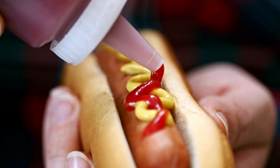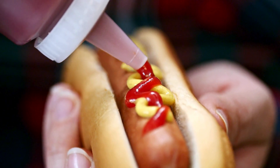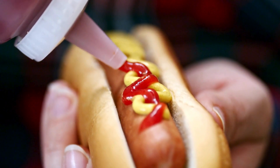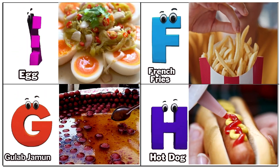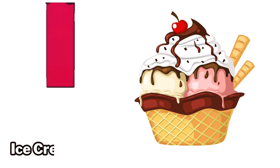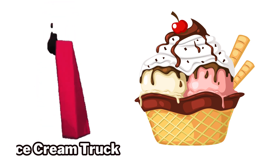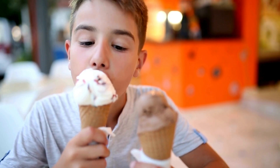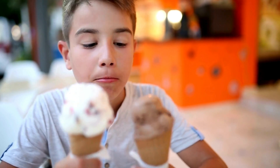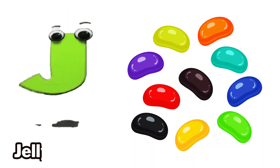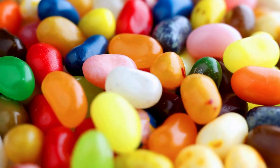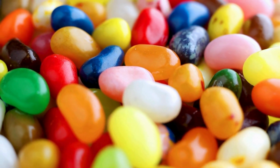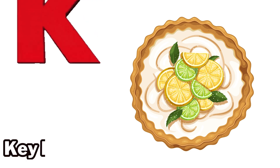H is for hot tub. I is for ice cream. J is for jelly bean.